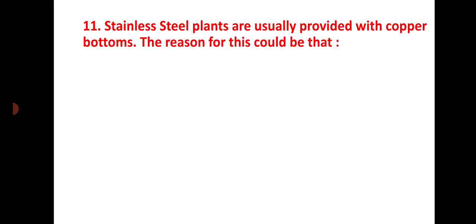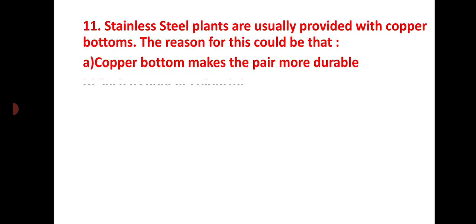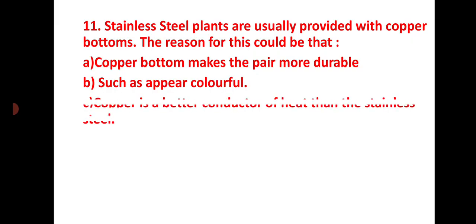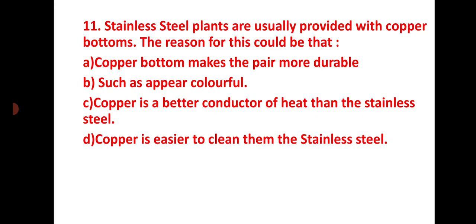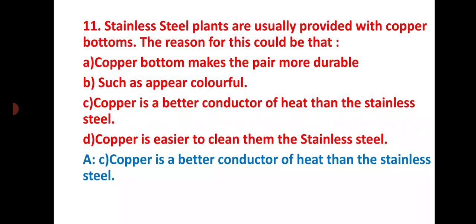Question number eleven: stainless steel pans are usually provided with copper bottoms. The reason for this could be that: copper bottom makes the pan more durable, such as appear colorful, copper is a better conductor of heat than the stainless steel, or copper is easier to clean than the stainless steel. The correct answer is copper is a better conductor of heat than the stainless steel.